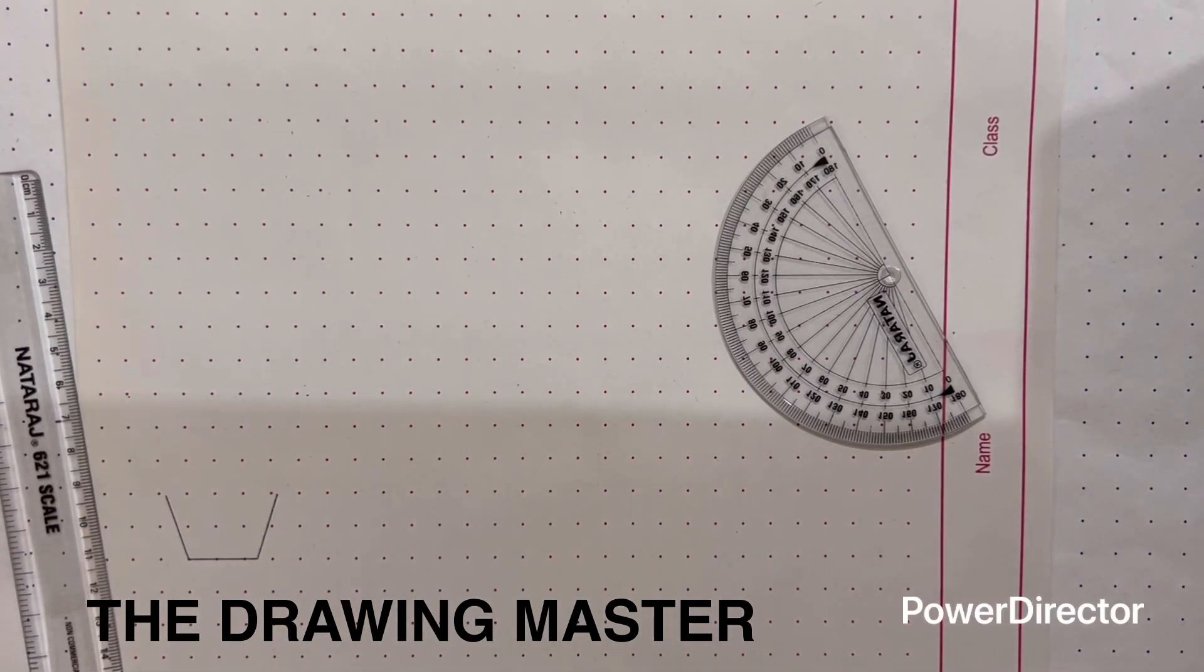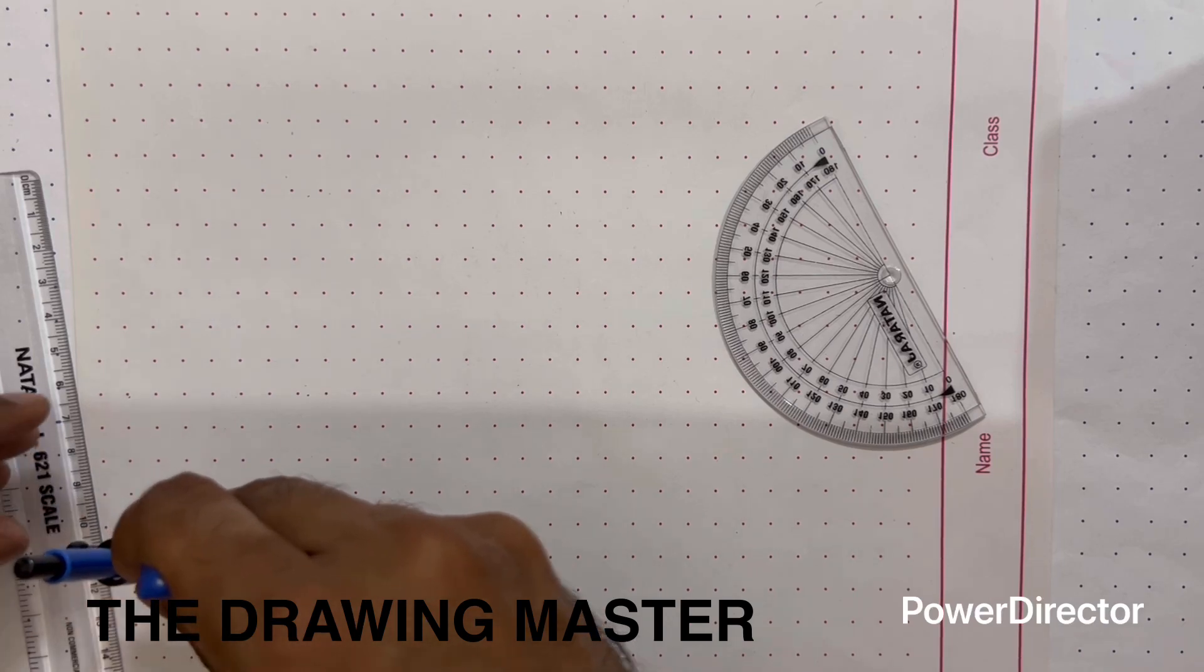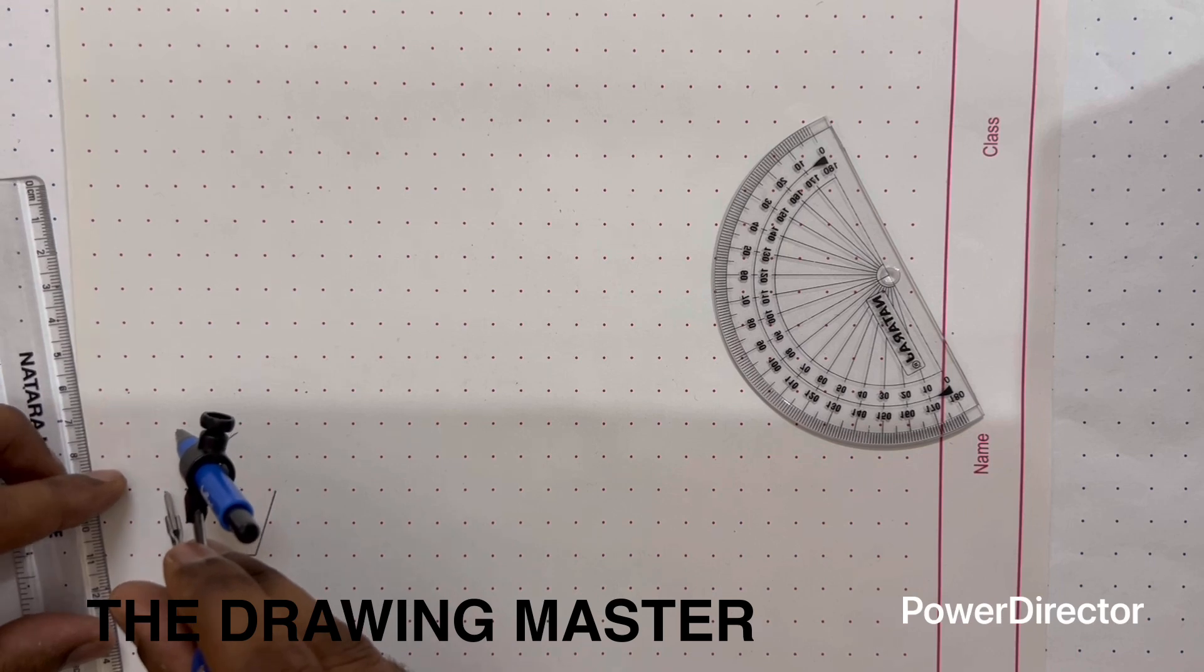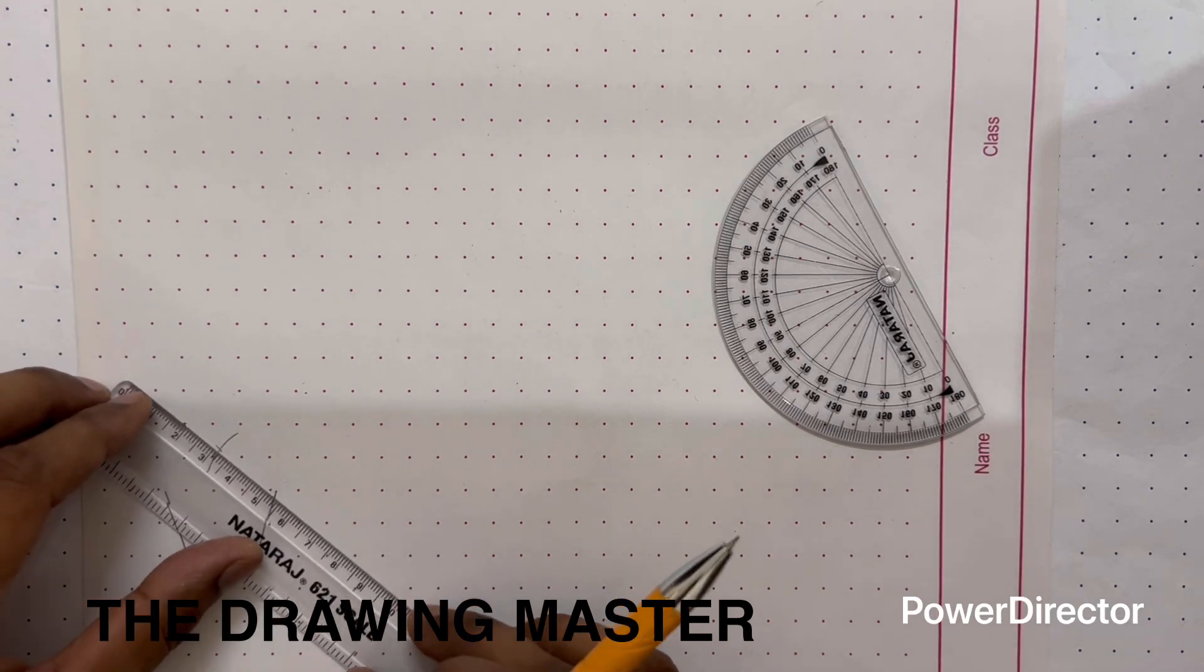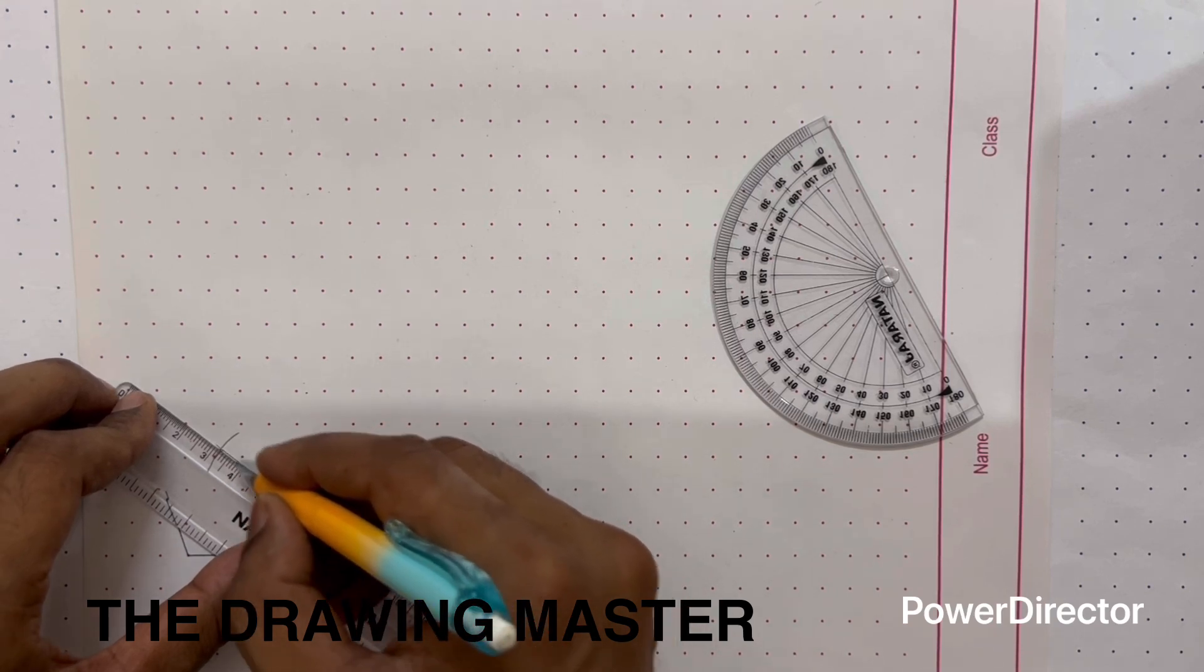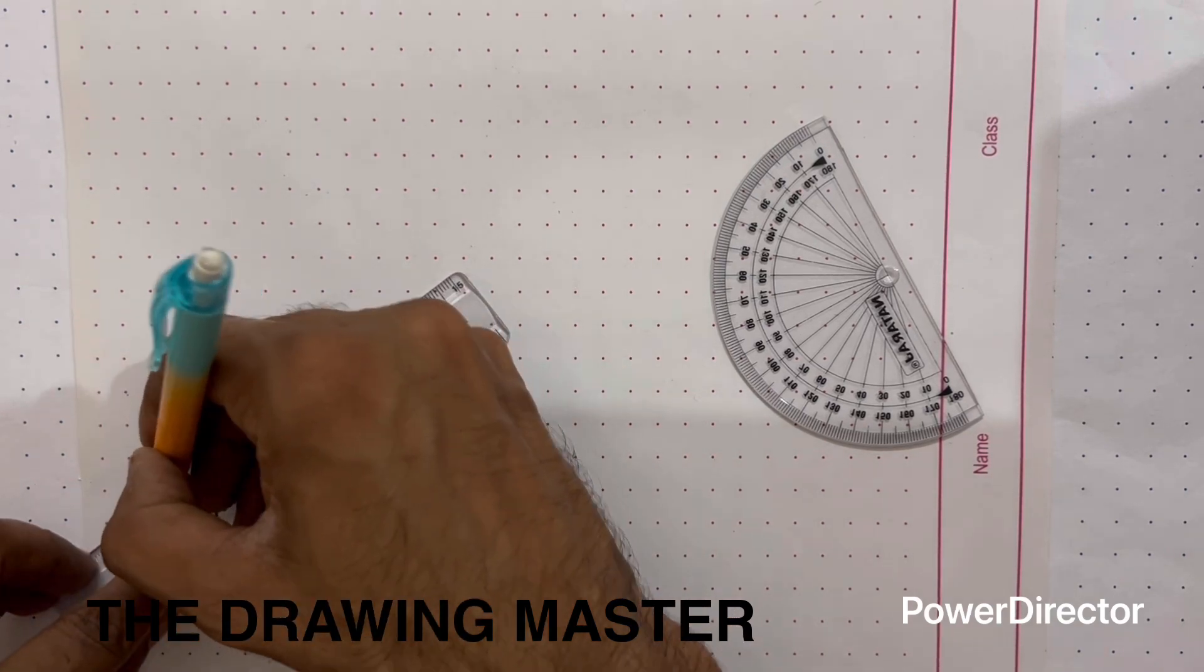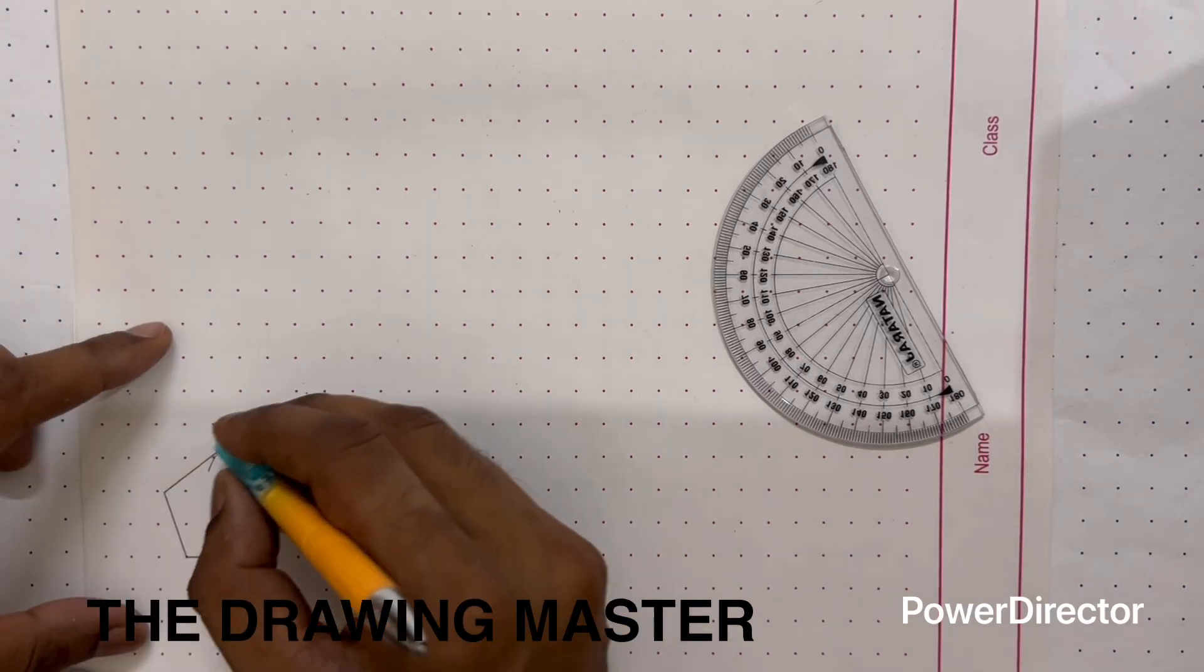Now we are left with two more edges. So here one very simple method is there. Just take a compass of 20 mm. Take an arc 20 this side and take an arc of 20 mm from this side. This is a regular pentagon.